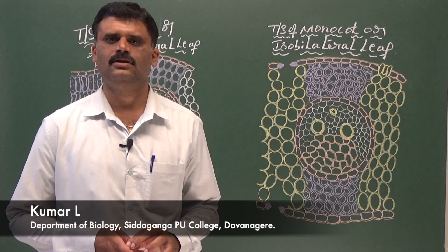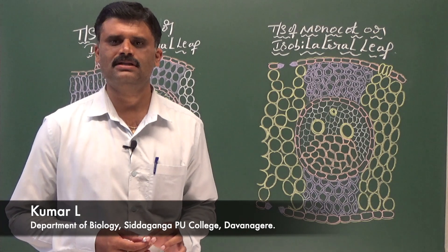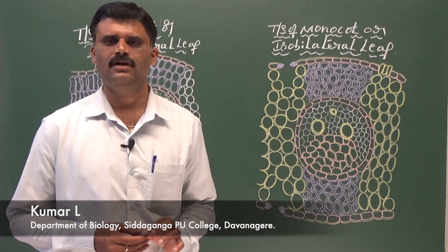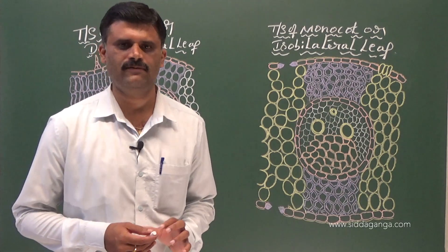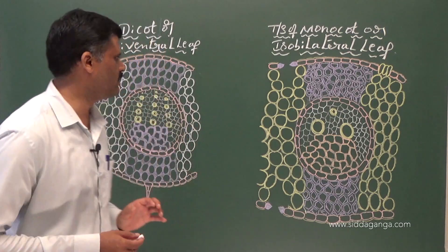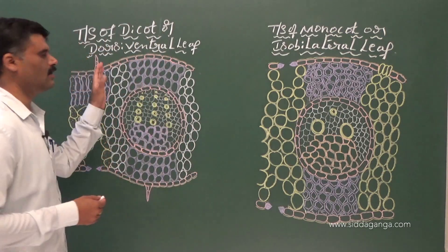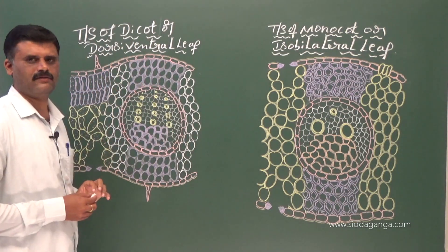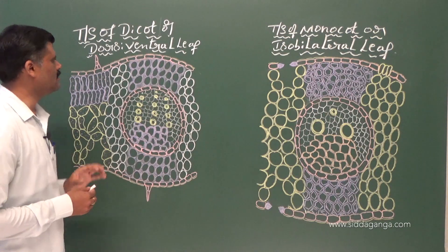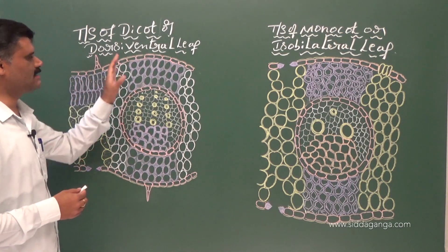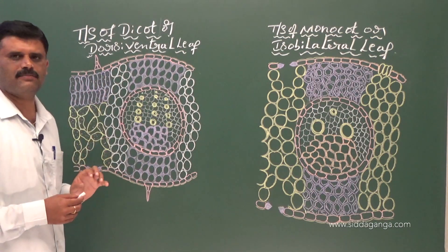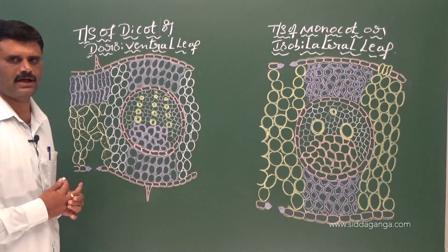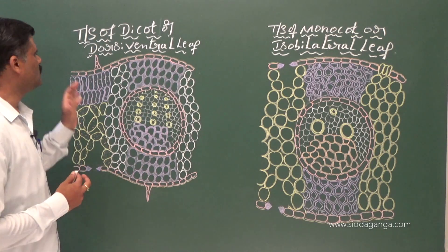Hello students, today we discuss about transfer sections of dicot and monocot leaf. First we take up the transfer section of dicot leaf. The dicot leaf consists of epidermis, ground tissue, and vascular bundles.